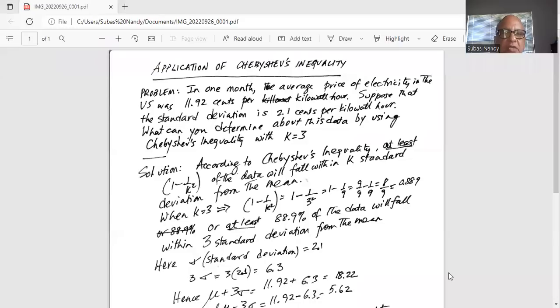In one month, the average price of electricity in the US was 11.92 cents per kilowatt hour. Suppose that the standard deviation is 2.1 cents per kilowatt hour. What can you determine about this data by using Chebyshev's inequality with k equal to 3?